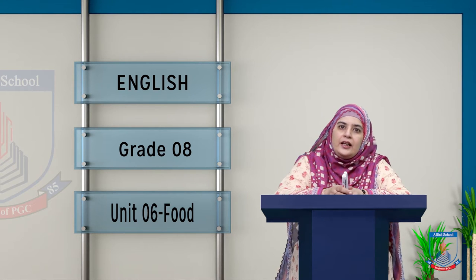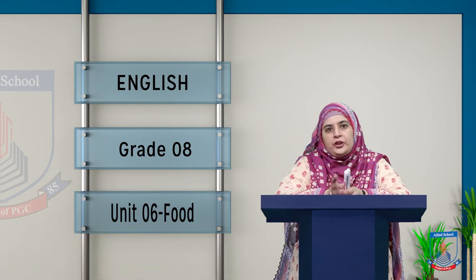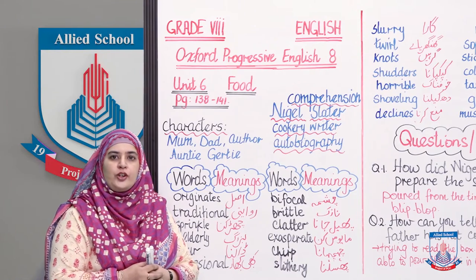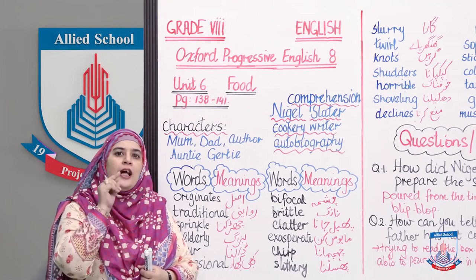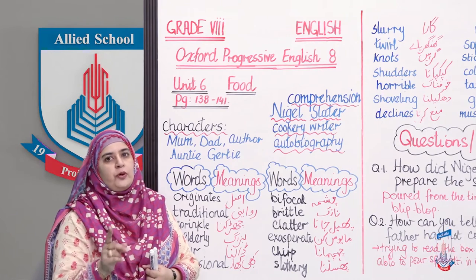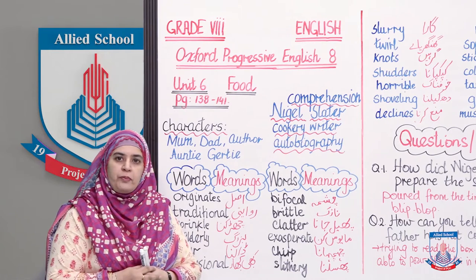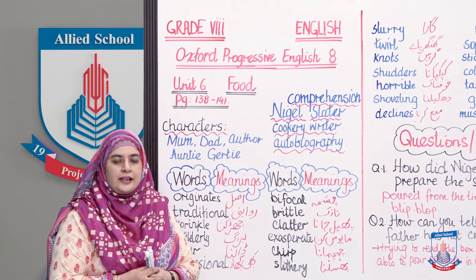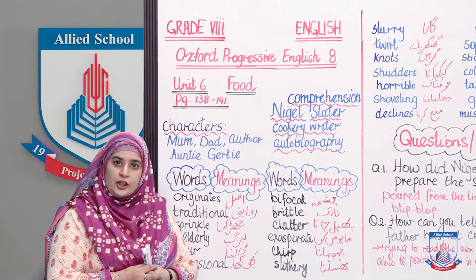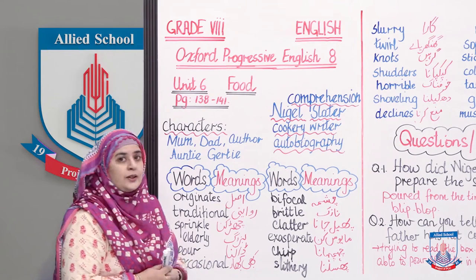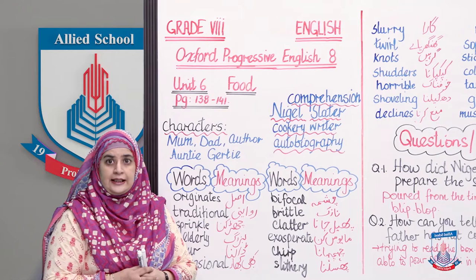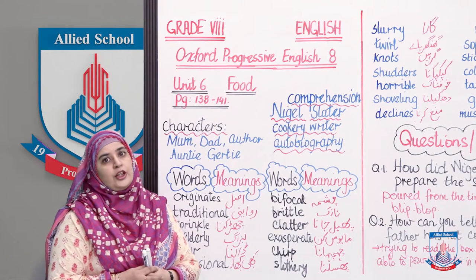Aaj hum kya padhenge? Yeh mein aapko bataaunggi board pe jaake. Chale board pe. Alright, I am going to wait for two minutes in order to give you time to take your books out. Board pe top of the board aapko nazar aara hoga ki aapne Oxford Progressive Reader nikalna hai. Uska page number mentioned hai. Page number is 138. Unit number is 6 and the title of the comprehension is food.